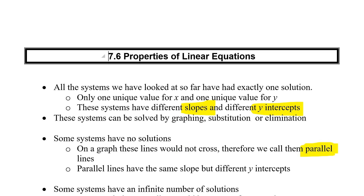How do we get parallel lines on a graph? Well, they have to have the same slope because they can never touch, but they need different y-intercepts. So if you've got the same slope but a different y-intercept, you've got parallel lines. Parallel lines have no solutions.